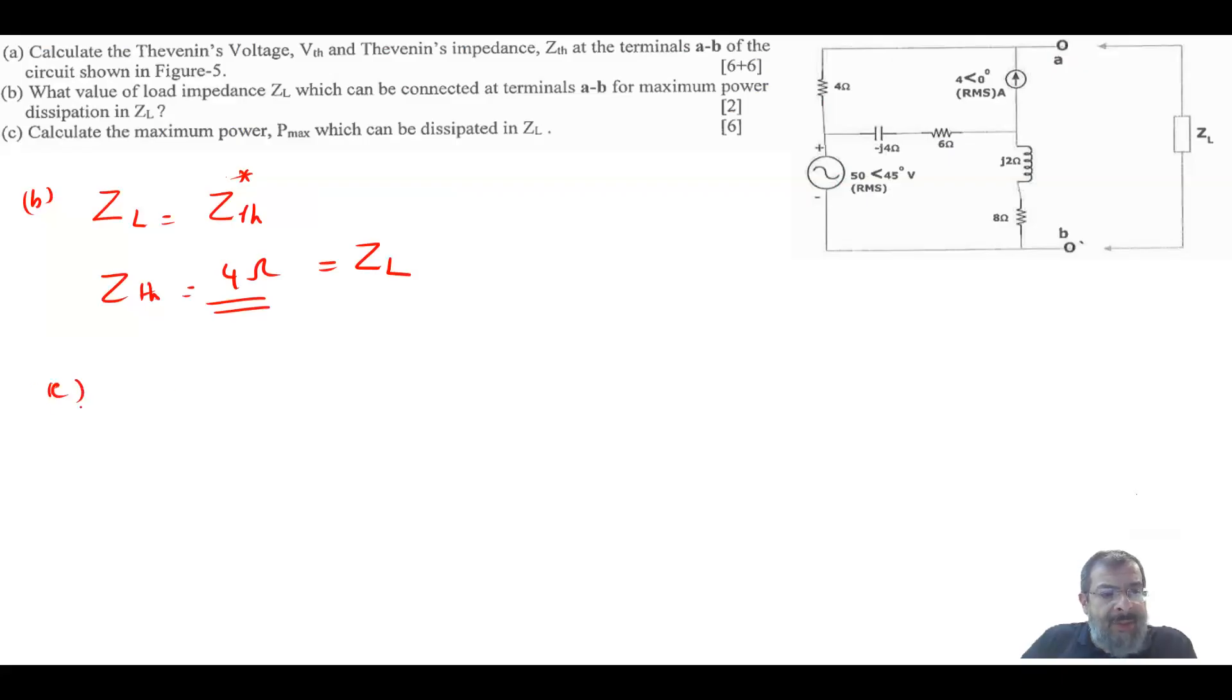Finally, what is the maximum power transfer? P max is equal to V Thevenin squared divided by 4 RL because this is just an R resistance. So basically, this is equal to 62. This is, we take the magnitude, 62.35 squared. Remember,